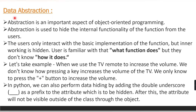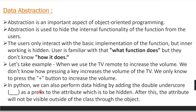In this video we will only see data abstraction; we will cover abstract classes in Python in the next video. In Python, we can perform data hiding by adding a double underscore as a prefix to the attribute which is to be hidden. After this, the attribute will not be visible outside the class through the object.